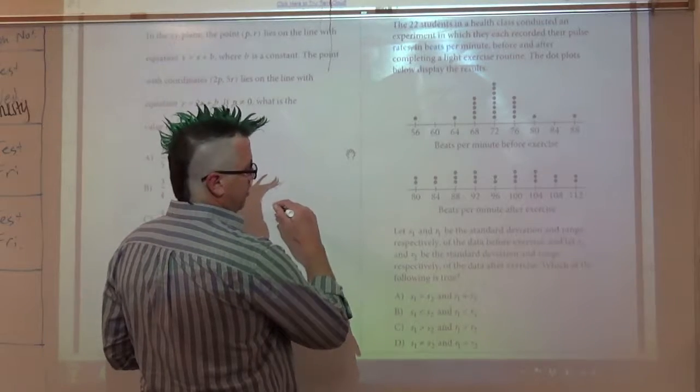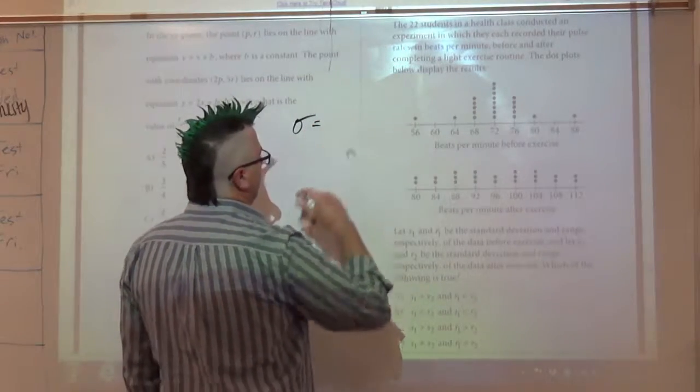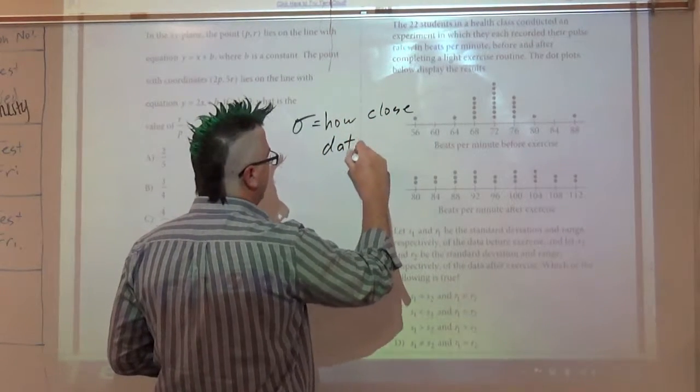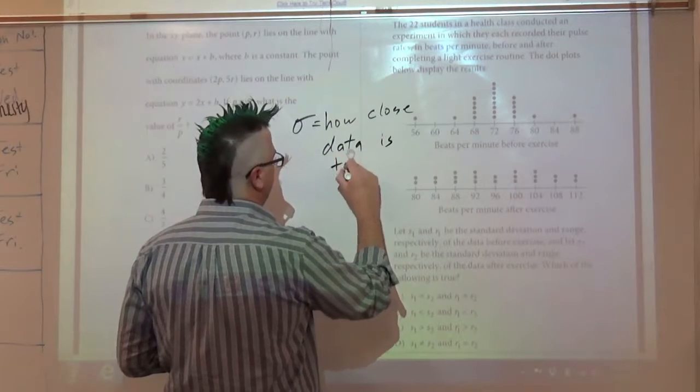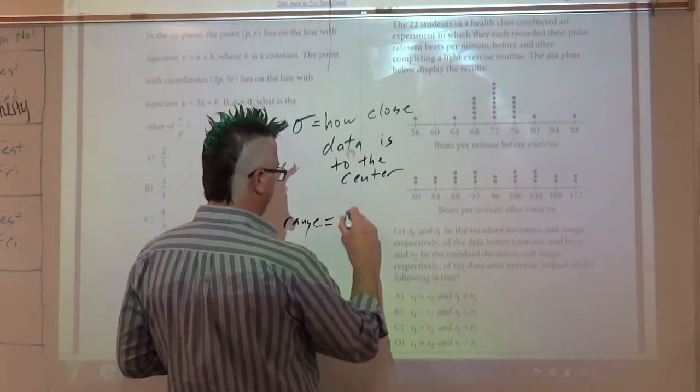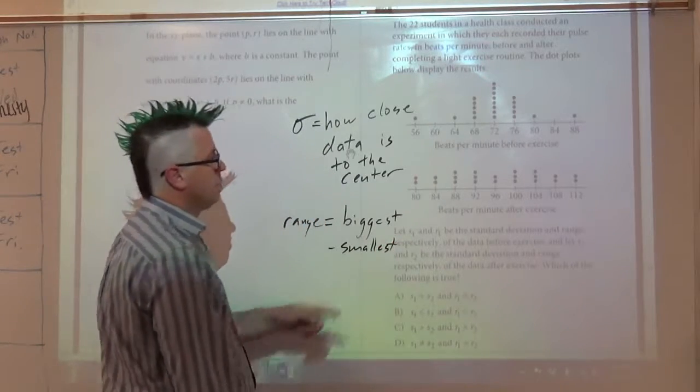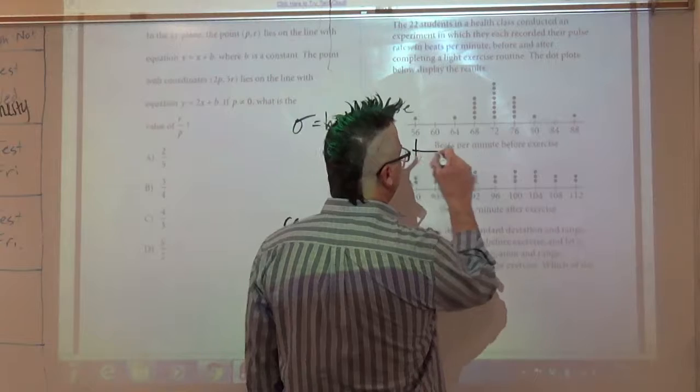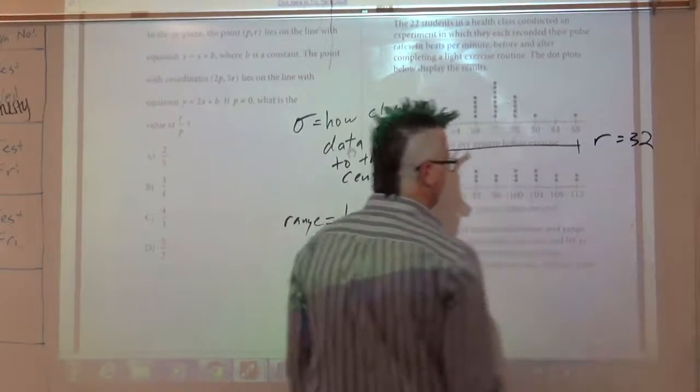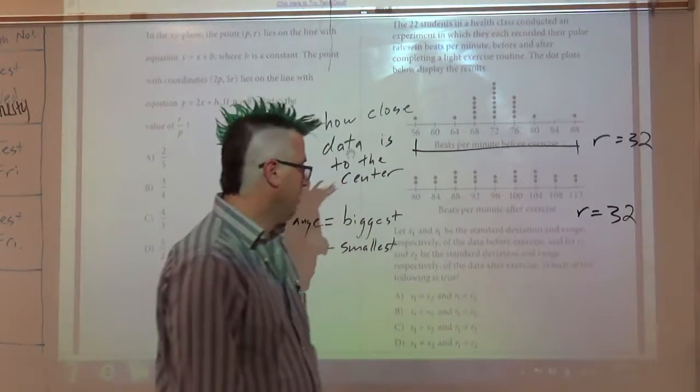Alright, so standard deviation is often just sigma. Without getting into too much of the details, it's mainly telling you how close the data is to the center. And your range is your biggest minus your smallest. So let's look at the range here. It went from 56 to 88, so you've got a range of 32 here. It went from 80 to 112, so you still have a range of 32 there. So the ranges are the same.